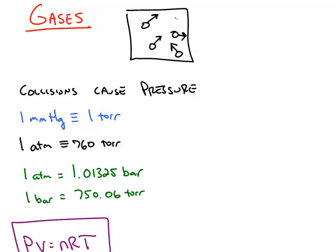A sample of gas has a certain pressure, which is caused by collisions with the surface of the container, and that pressure can be measured in different units. Here we have a bunch of conversion factors. The most common ones are probably millimeters of mercury, which is also known as torr, or atmospheres. But bar is also a standard unit of pressure.